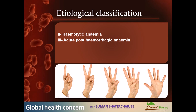The third type is acute post-hemorrhagic anemia, which involves loss of RBCs. 'Hemorrhagic' refers to the loss of blood — not only red blood cells but blood loss due to accidents, infections, injuries, and many other causes.